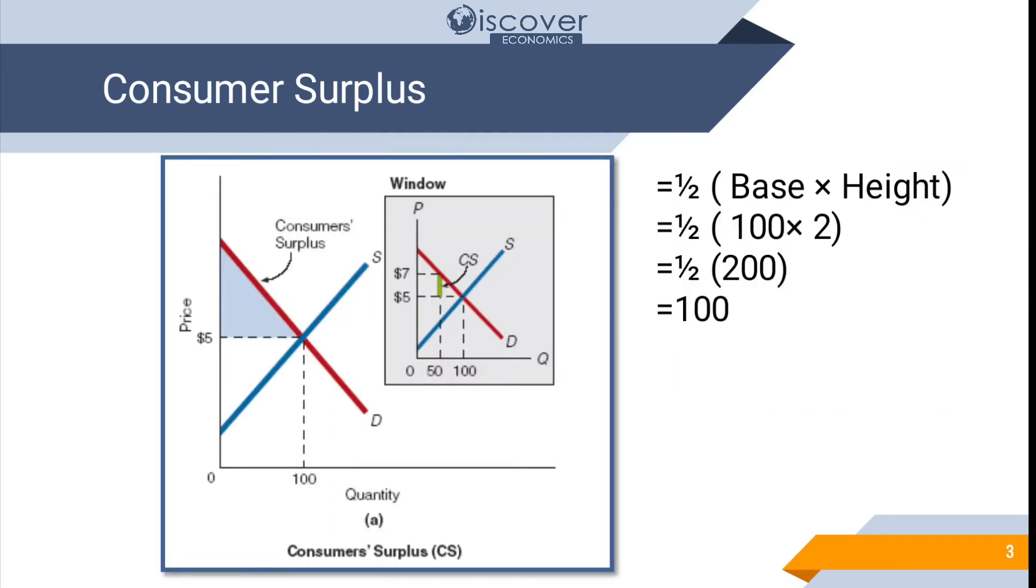Look at this diagram. Here we have quantities on the x-axis and the prices on the y-axis and forces of demand and supply are letting us buy the product at $5. But actually we had an expectation that we are going to buy the item of $7. But when we go to the market we had a bargaining and we were able to buy at $5. So the difference of 7 minus 5 will be 2.